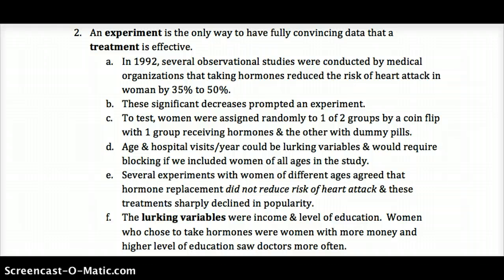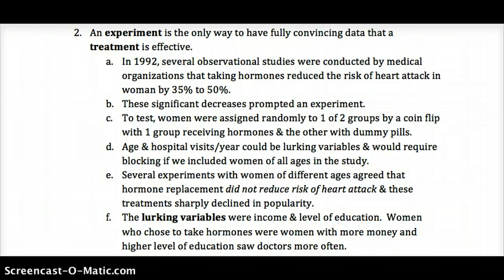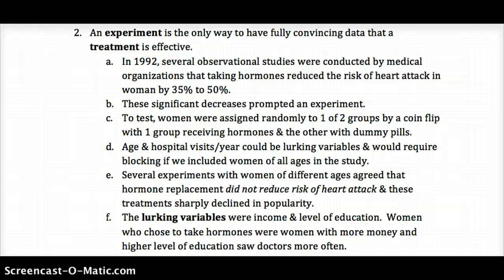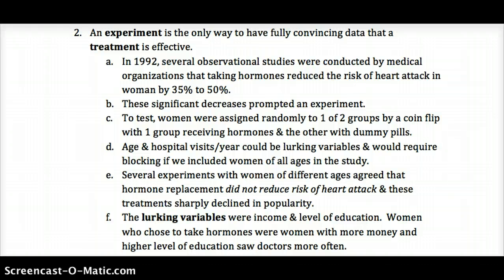These hormone replacement treatments declined in popularity. It turned out the main lurking variables were income and level of education. Women who had more income and were more educated were taking more hormones and ended up having better health — perhaps because they knew how to eat better and had more access to equipment for working out. Those are lurking variables: variables we haven't accounted for in our study that are affecting the response variable we're trying to measure.